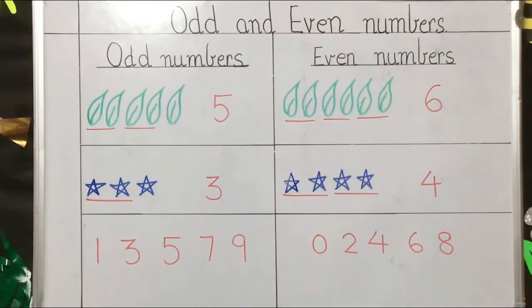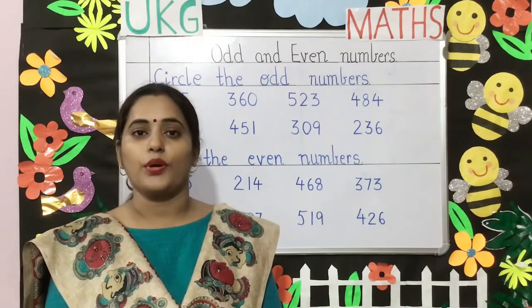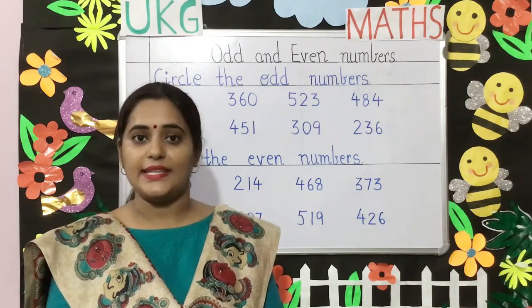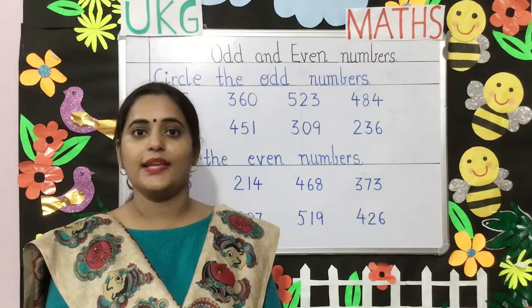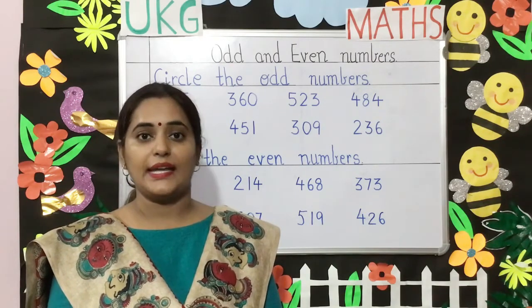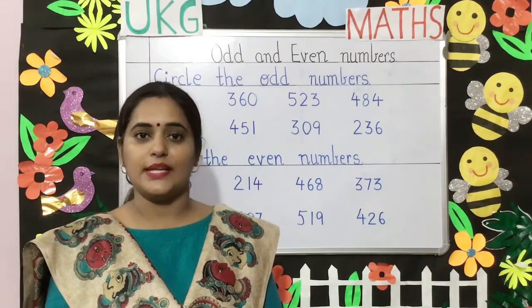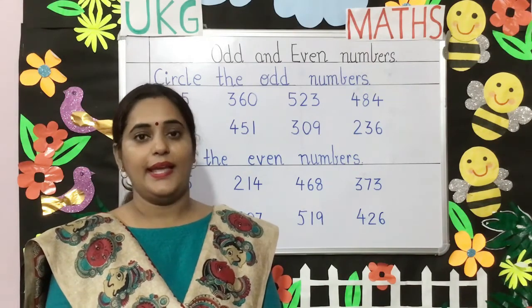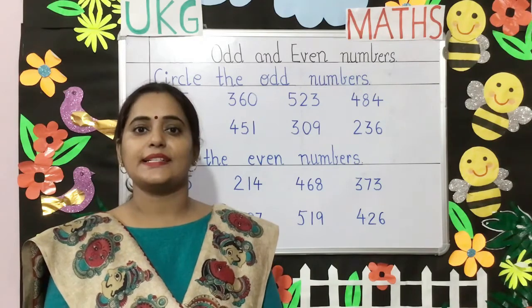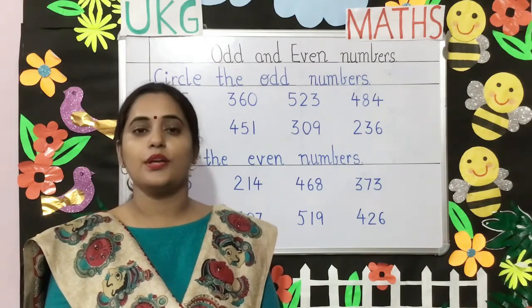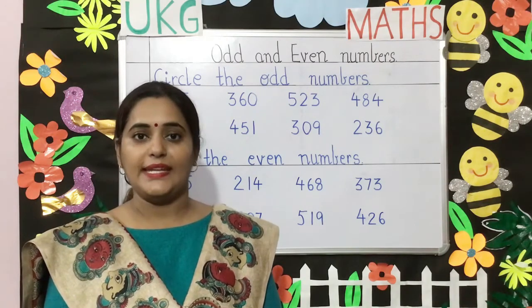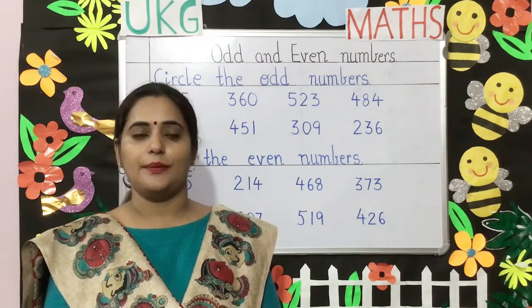So children, what is an odd number? Any number that ends with one, three, five, seven, or nine is an odd number. And what is an even number? Any number that ends with zero, two, four, six, or eight is an even number.